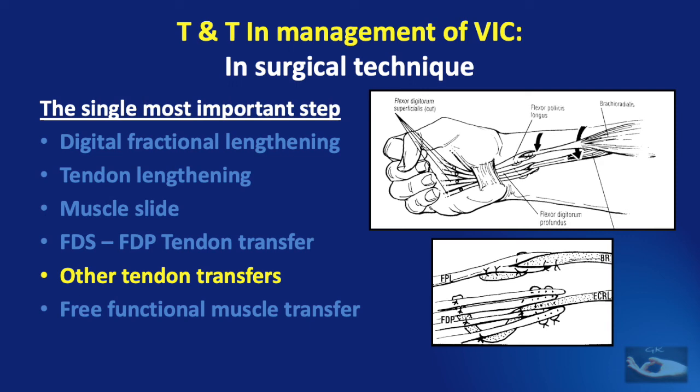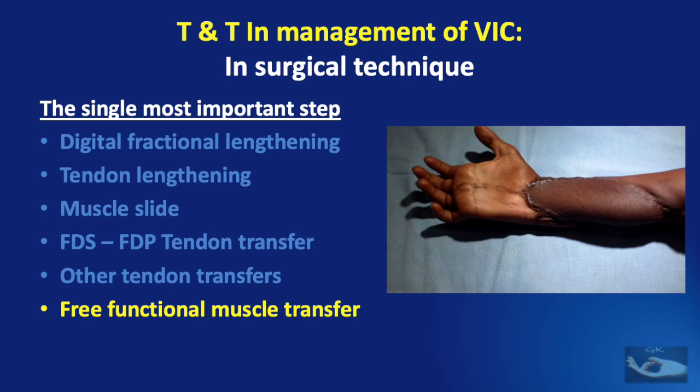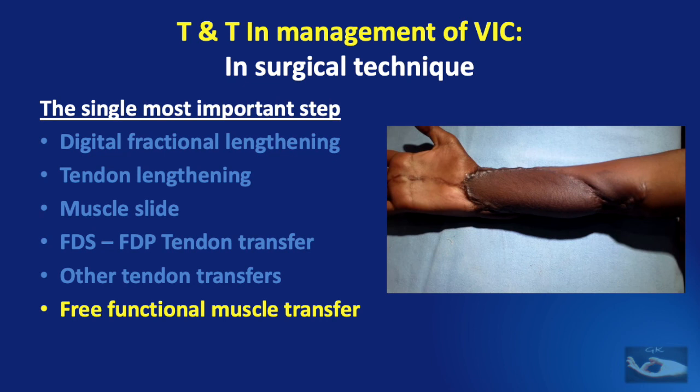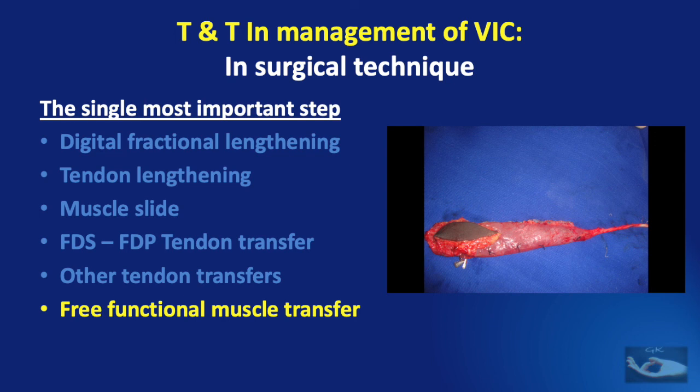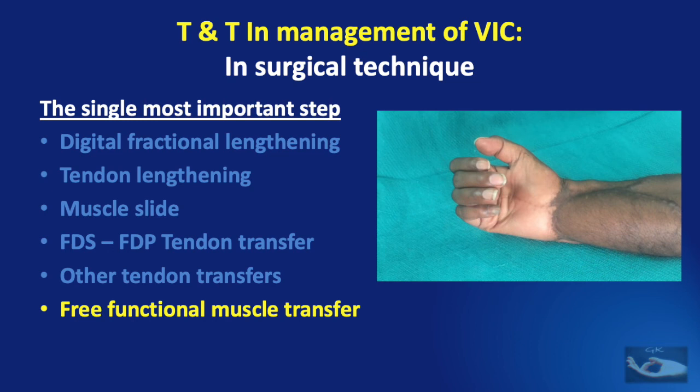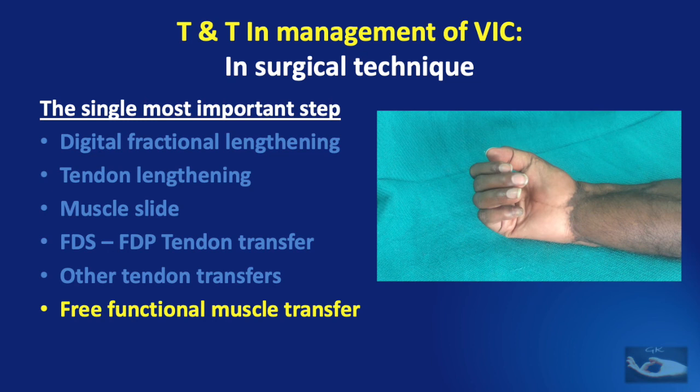For free functional muscle transfer in Volkmann's ischemic contracture, the gracilis is most commonly used. The important steps are the meticulous harvest of the gracilis muscle, if possible including a skin paddle for monitoring, adjusting the tension of the muscle when sutured after creating a good origin and a strong insertion. The muscle should not be overly stretched or too relaxed. A good vascular anastomosis and nerve coaptation are required for achieving good function.